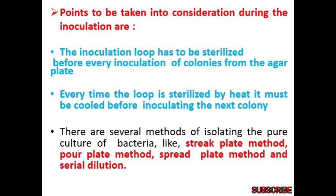What are the different points to be taken into consideration when we are going for inoculation? Inoculation means when you take one loop, dip it into that particular test organism, and place it into the petri plate — that is known as inoculation. The inoculation loop has to be sterilized before every inoculation of colonies from the agar plate. Every time the loop is sterilized by heat, it must be cooled before inoculating the next colonies.